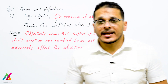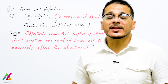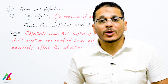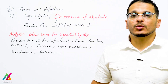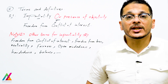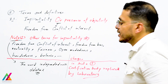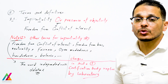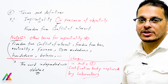Note 1 clarifies that objectivity means conflicts of interest don't exist or are resolved so as not to adversely affect lab activities. Note 2 provides other terms for impartiality: freedom from conflict of interest, freedom from bias, neutrality, fairness, open-mindedness, even-handedness, and balance. Changes from the previous edition include deletion of 'independentness' from Note 2, and 'certification body' replaced by 'laboratory' in Note 1.